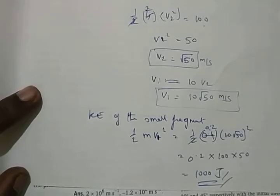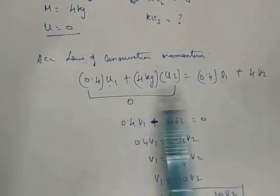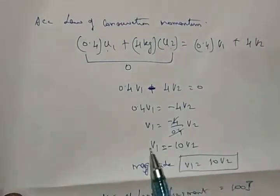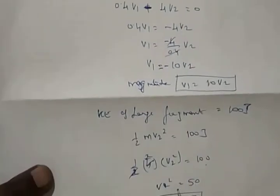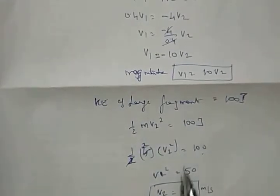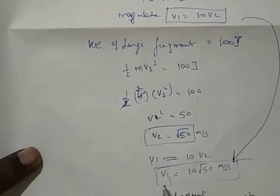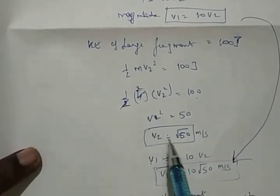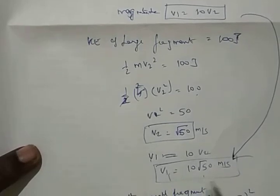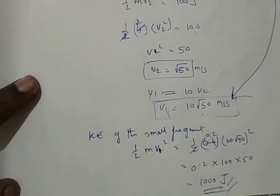Hope it helps. We have done it methodically. Law of conservation of momentum gave us the relationship between V1 and V2. Then we found V2 using the kinetic energy formula. The relationship V1 = 10·V2 helped us find V1. Substituting V1 allowed us to find the kinetic energy of the smaller fragment.